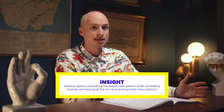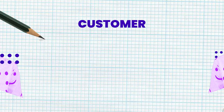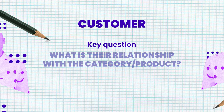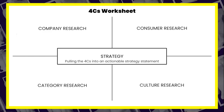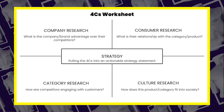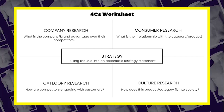The key question for the customer quadrant is: what is their relationship with the category and product? Here we want to explore how customers are engaging with these products — what they're using them for, how they're consuming it, the frequency of purchase, what is drawing them in or pushing them away, and what their brand behaviors and mental associations with the category are. This is an opportunity to find the customer problem.